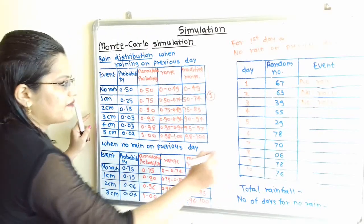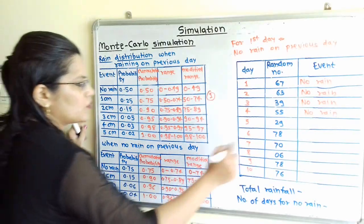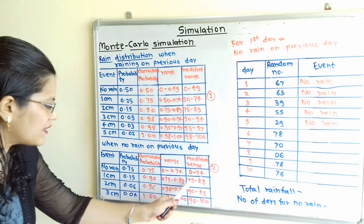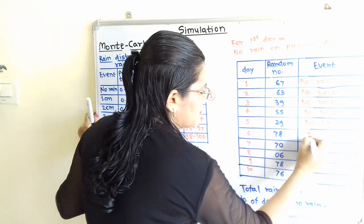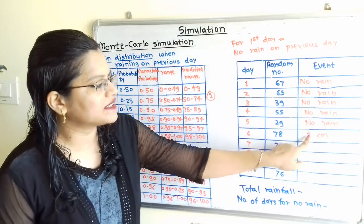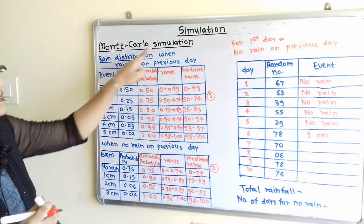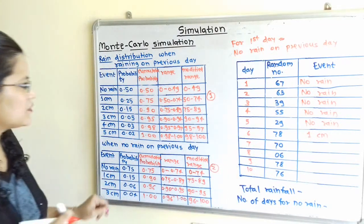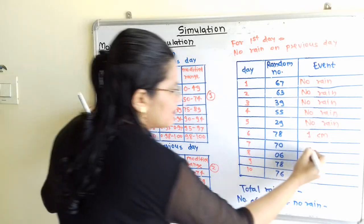Then 78 will fit in the second row, 75 to 89, so 1 cm rain is there. Now on the 7th day, if we observe the previous day — that is the 6th day — 1 cm rain occurred. So we refer Table 1 because this is the table for when raining on the previous day. For the 7th day, random number 70 fits in the second row, between 50 and 74, so 1 cm rain is there.